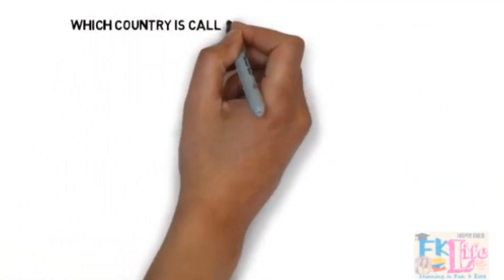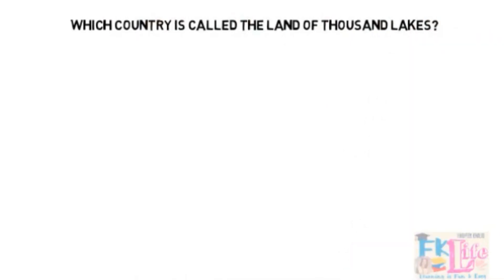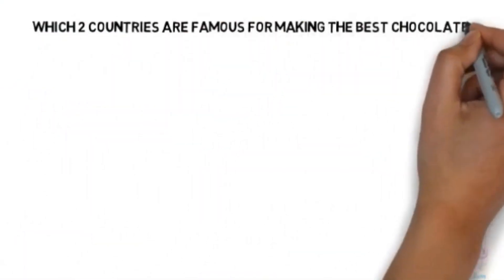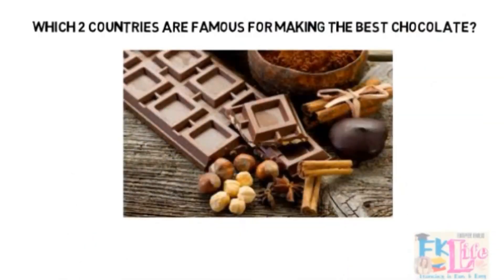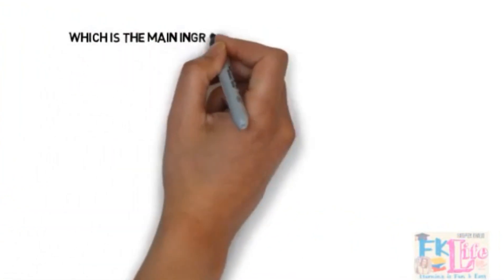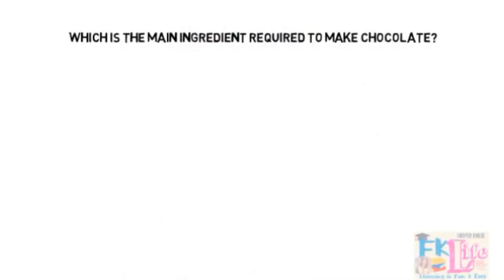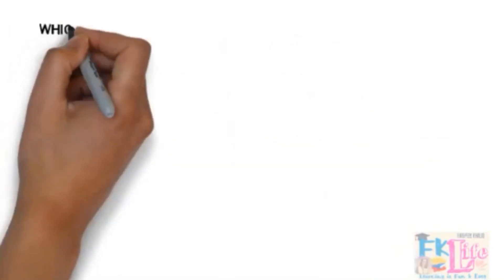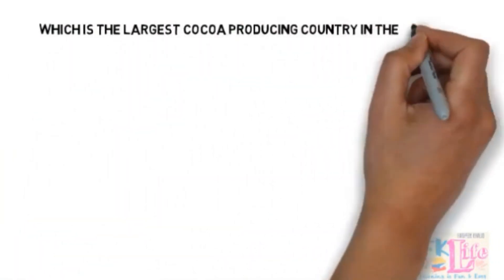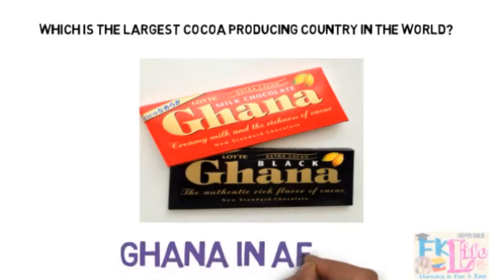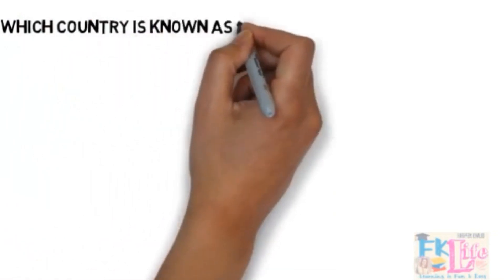Which country is called the land of a thousand lakes? It's Finland. Which two countries are famous for making the best chocolate? Belgium and Switzerland. Which is the main ingredient required to make chocolate? It's the cocoa beans. Which is the largest cocoa-producing country in the world? It's Ghana, in Africa.